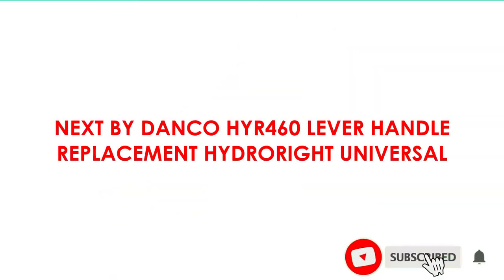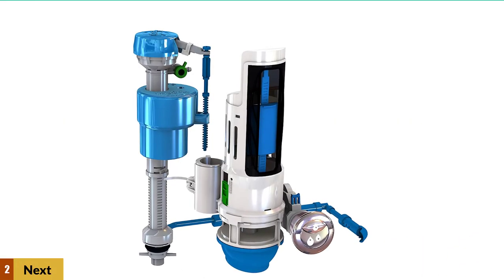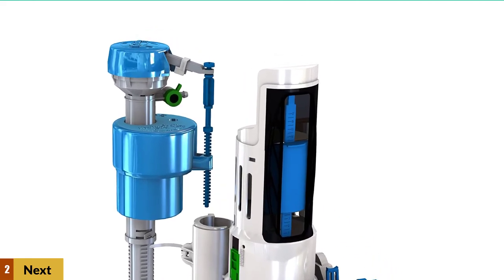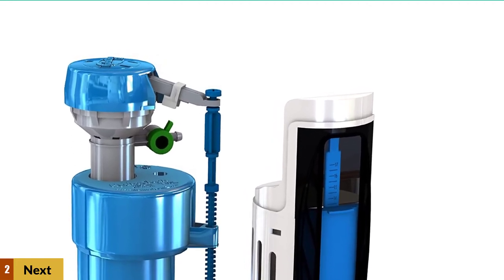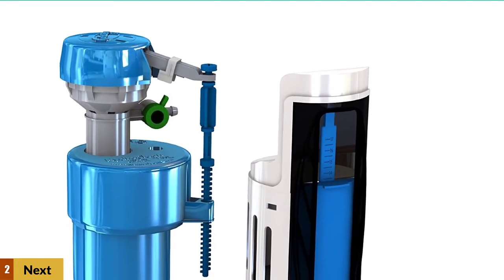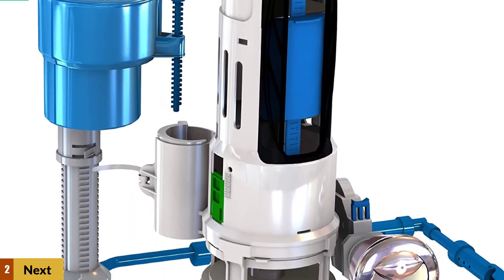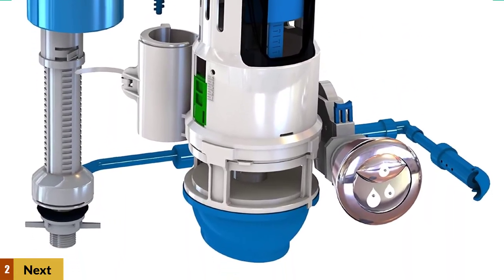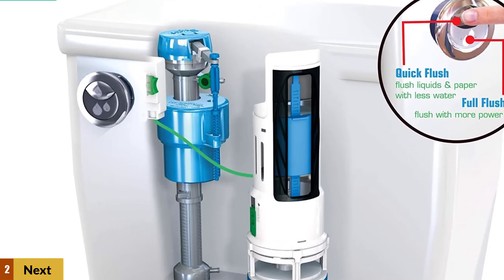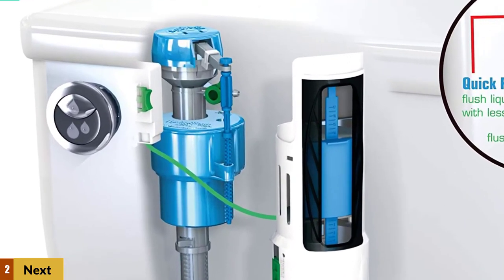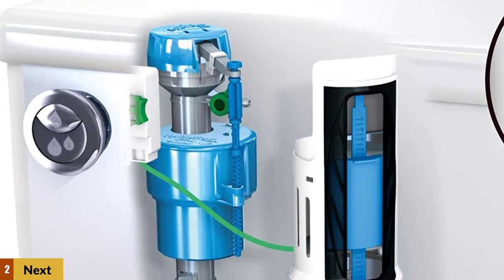At number two, Next by Danco HYR-460 lever handle replacement Hydrorite Universal. This item is designed for bare hand installation and offers excellent water saving capabilities. You can install it into any tank with a 10 inch clearance and taller, but not into tanks by Mansfield. If you use it with the proprietary dual flush system, the economy rises significantly and lets you use around 70% less water for liquid waste and paper. The soft flush lets you reduce the overall yearly consumption by up to 16,000 gallons.